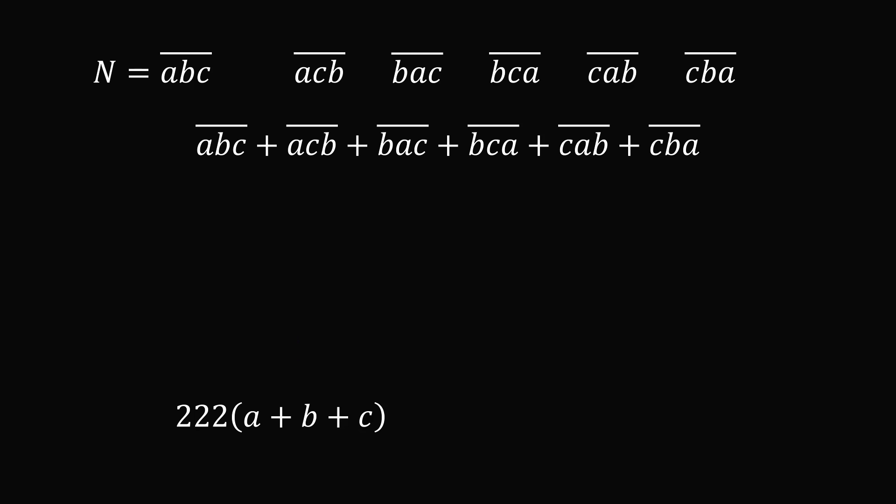But there's another way that we could sum all six of these numbers. From the given information in the problem, these five new numbers will have a sum of 2022. So let's add ABC to this sum. So this is equal to 2022 plus 100A plus 10B plus C. And this value will be equal to 222 multiplied by the sum of A, B, and C.